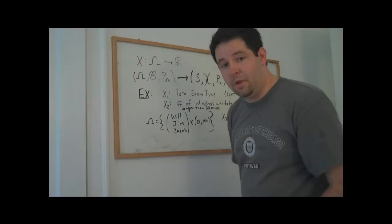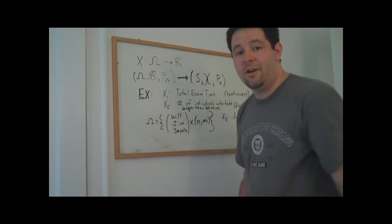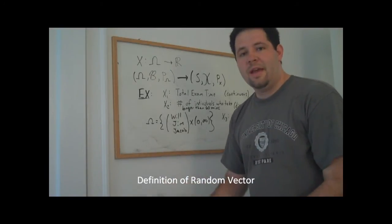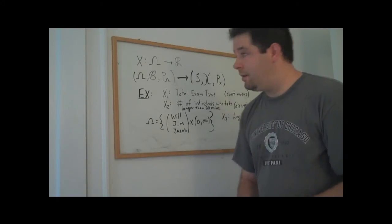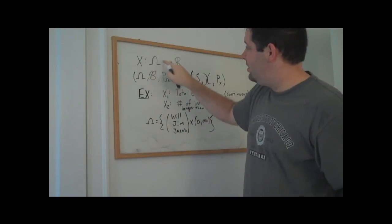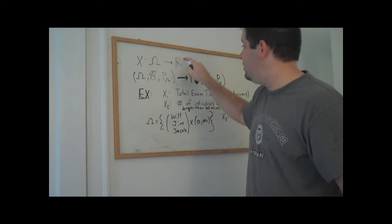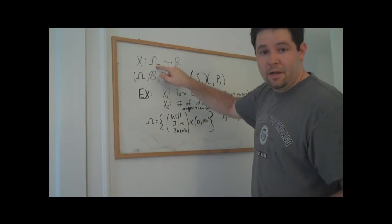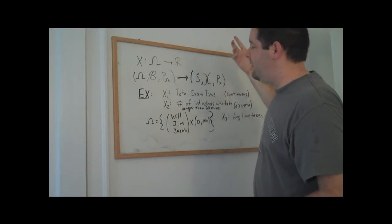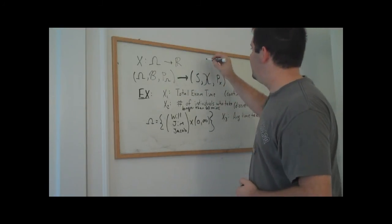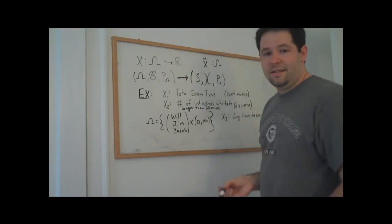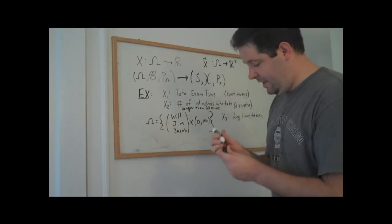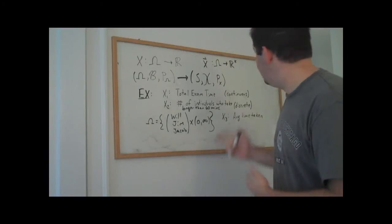But the point is that we can define a whole host of random variables from just this same experiment. Now that is going to be the idea of what we're going to call a random vector. Now a random variable took the outcomes of an experiment and converted them into one real number. A random vector takes the outcomes of an experiment and converts them into a whole bunch of different real numbers. So if you want to think about a random vector, it takes the sample space and takes it into a k-dimensional vector of real numbers.